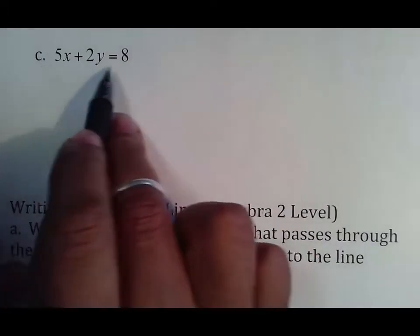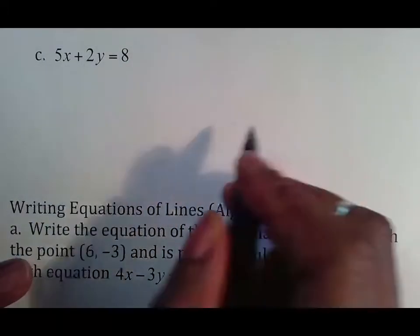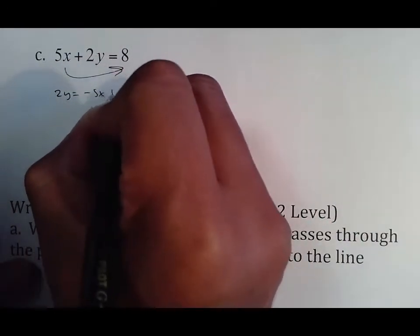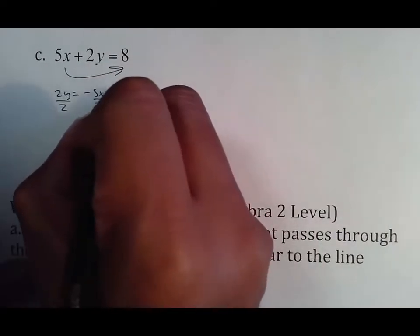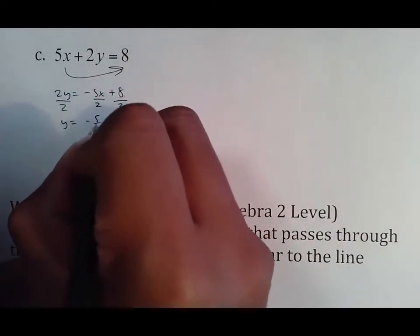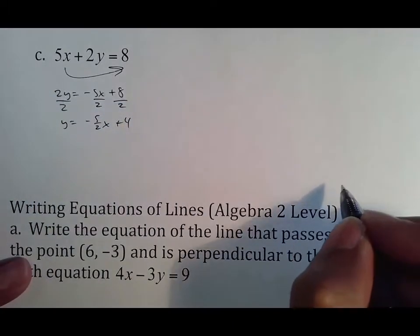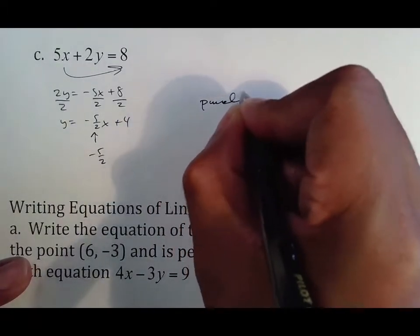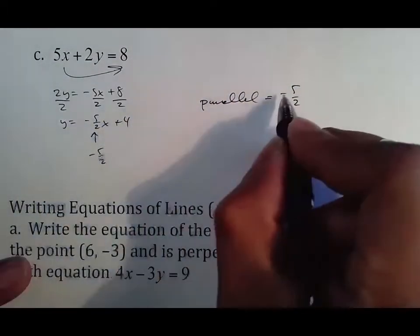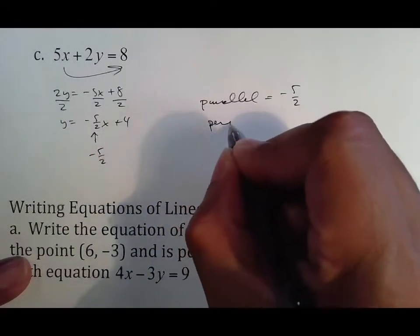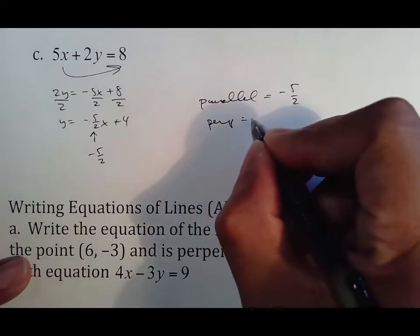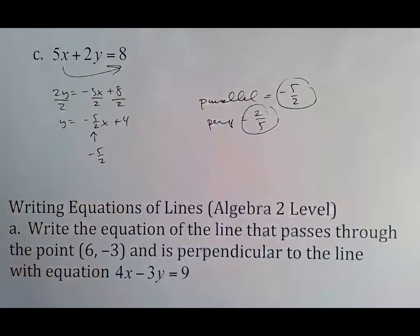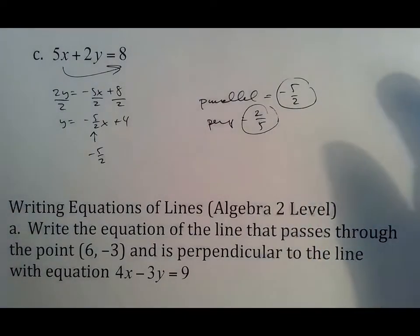Here's a trickier type: find parallel and perpendicular slopes when the equation isn't in slope-intercept form — for example, 5x + 2y = 8. Move the 5x: 2y = −5x + 8, then divide everything by 2: y = −5/2 x + 4. The slope is −5/2, so parallel is −5/2, and perpendicular is +2/5 (switch sign, flip fraction).